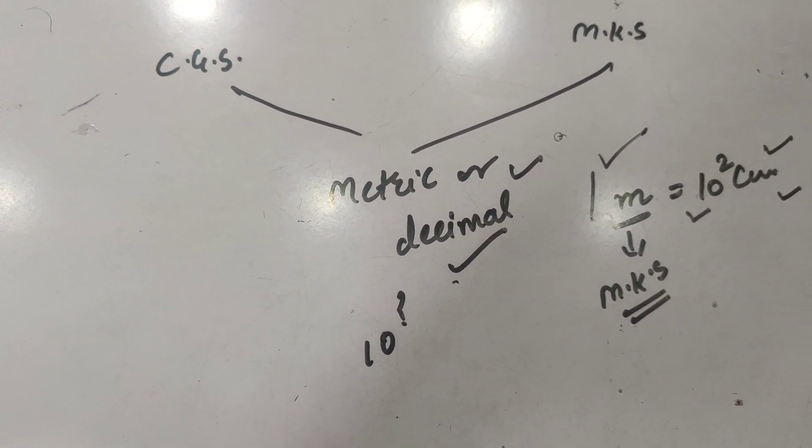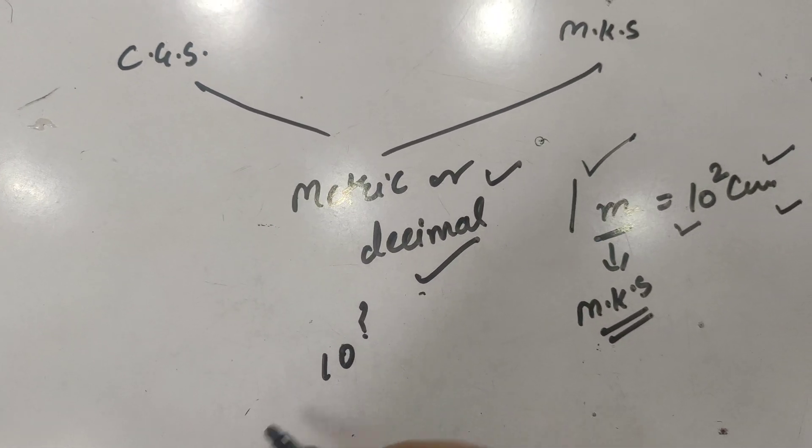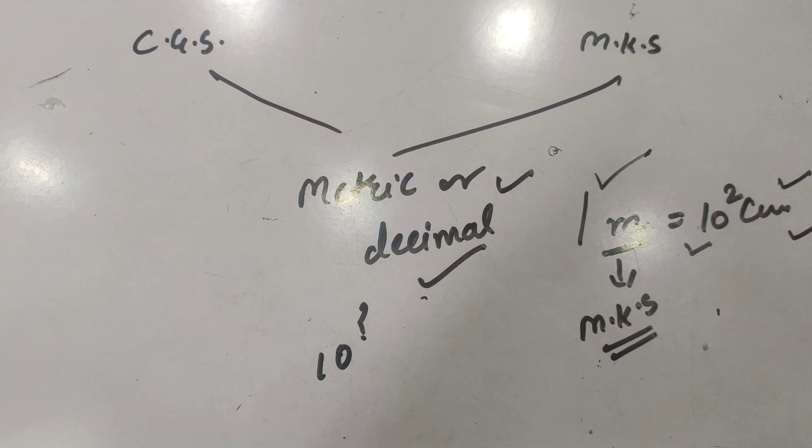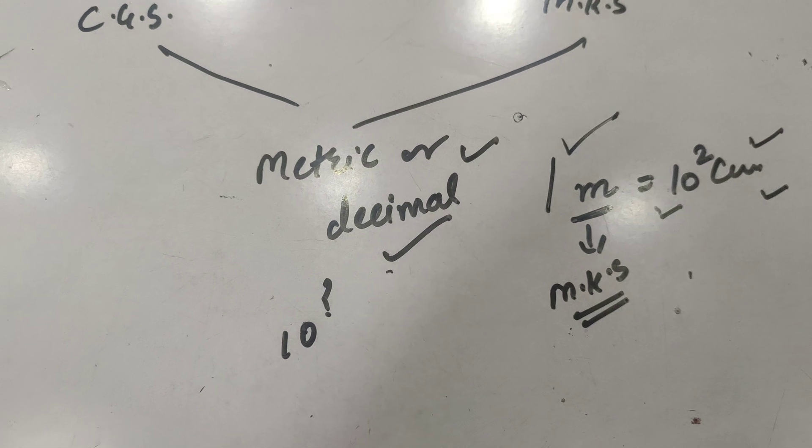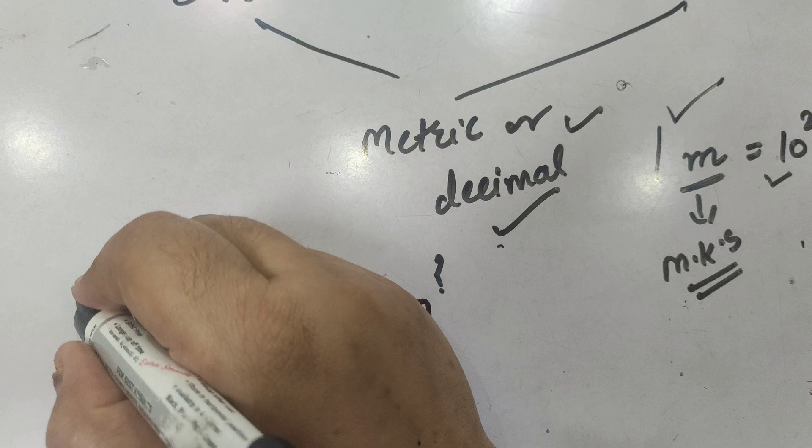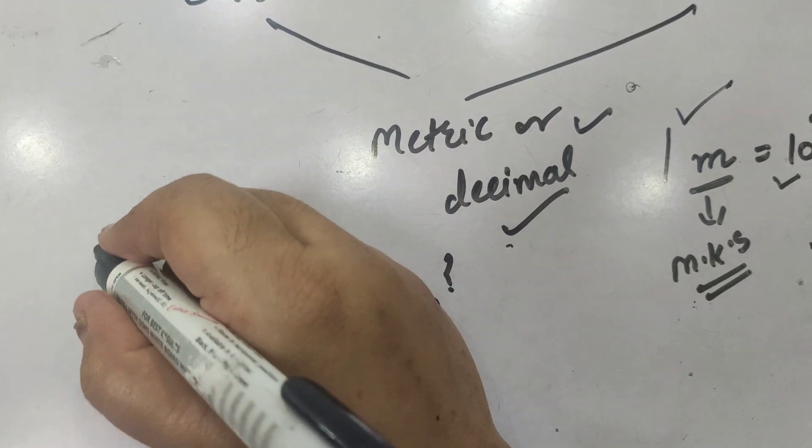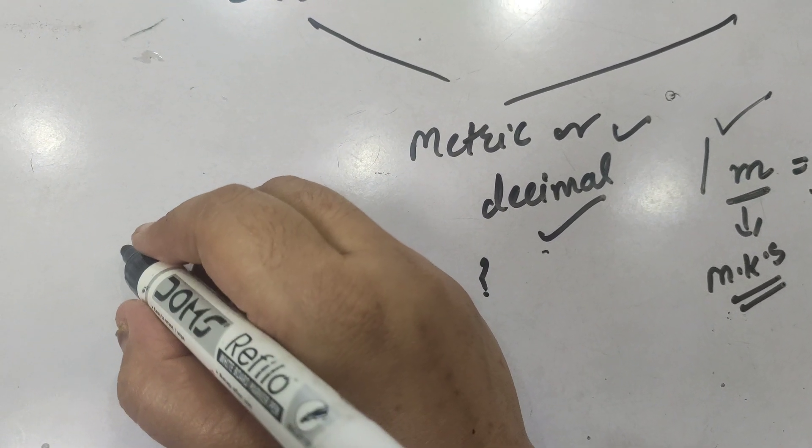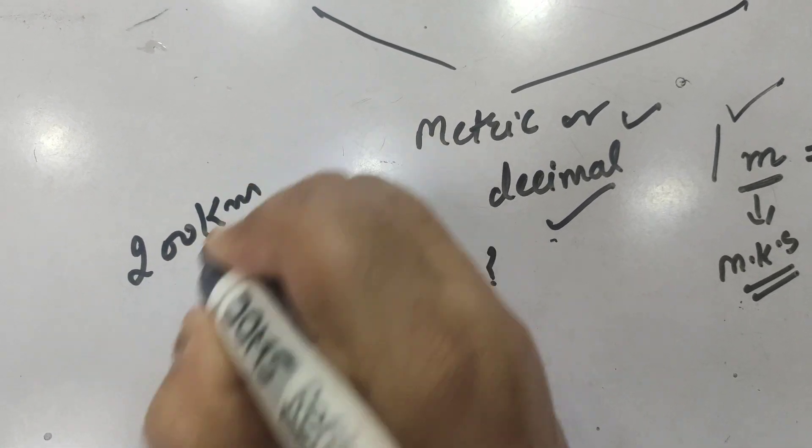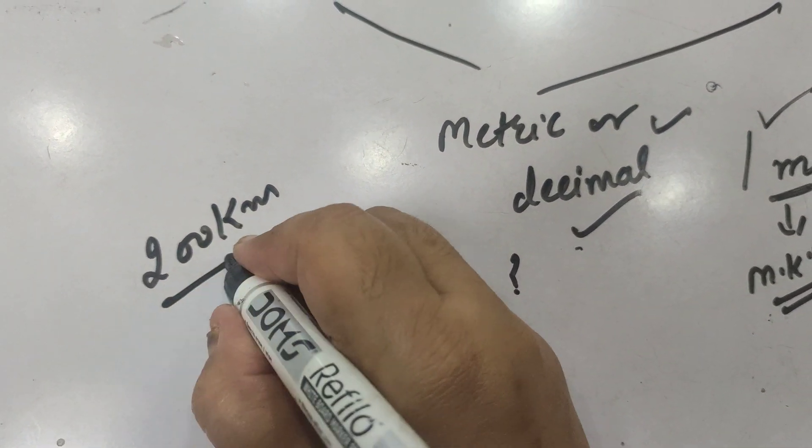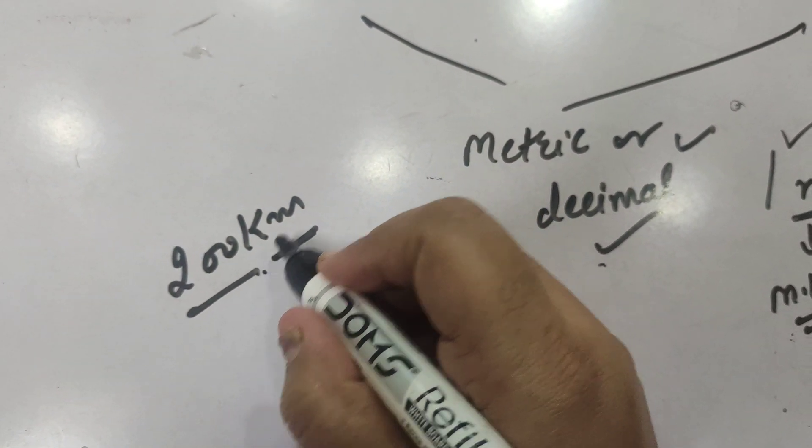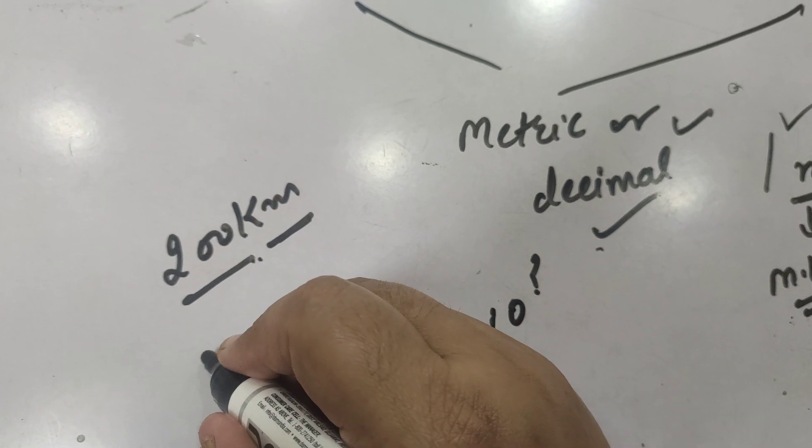Now let us talk about the drawback of CGS system. Actually, the CGS system does not have a convenient size to express any measurement. For example, if we are talking about distance - let the distance of Delhi from here be suppose 200 kilometer. In this case, kilometer is a convenient unit, but to represent in CGS system we will write it...